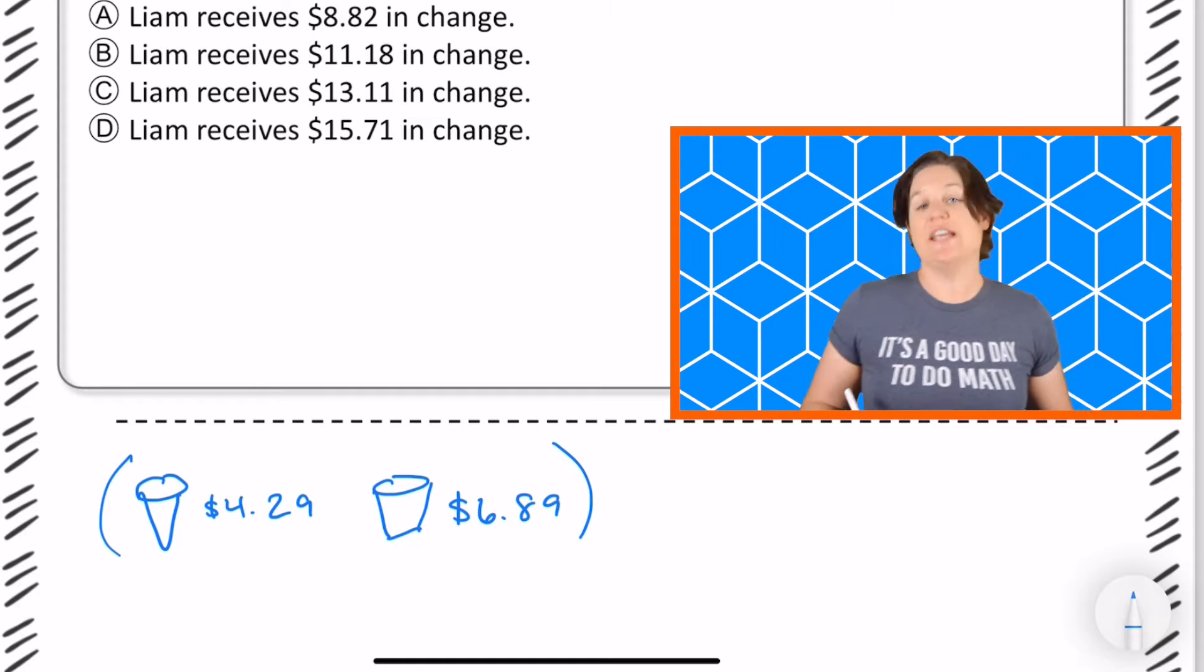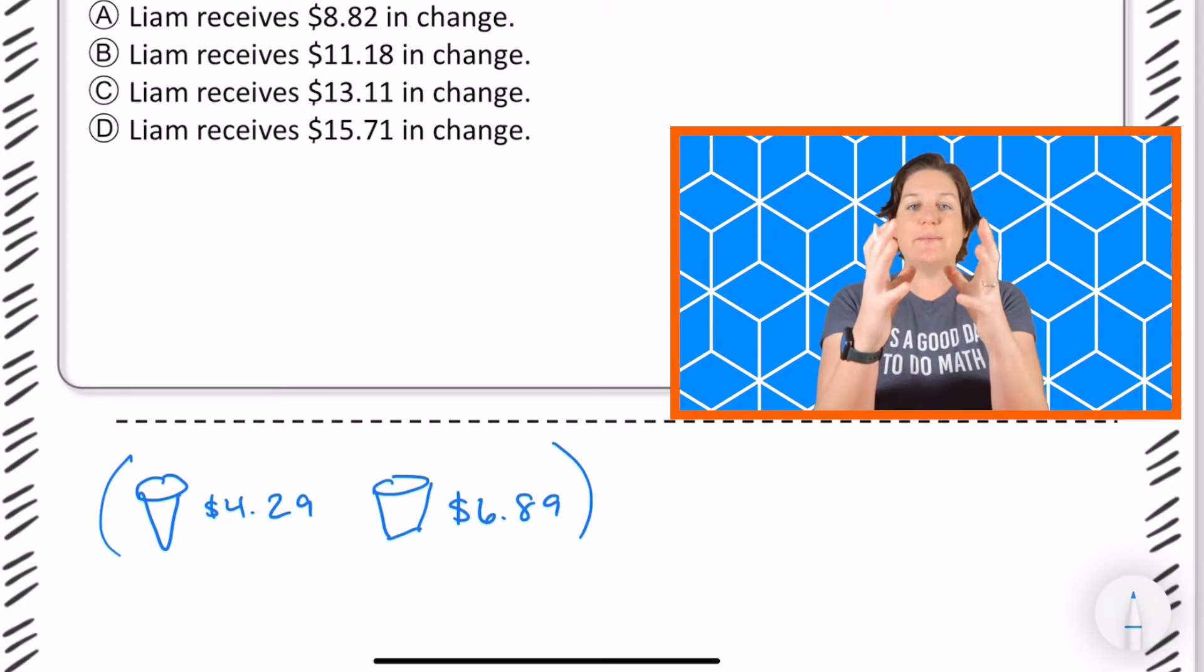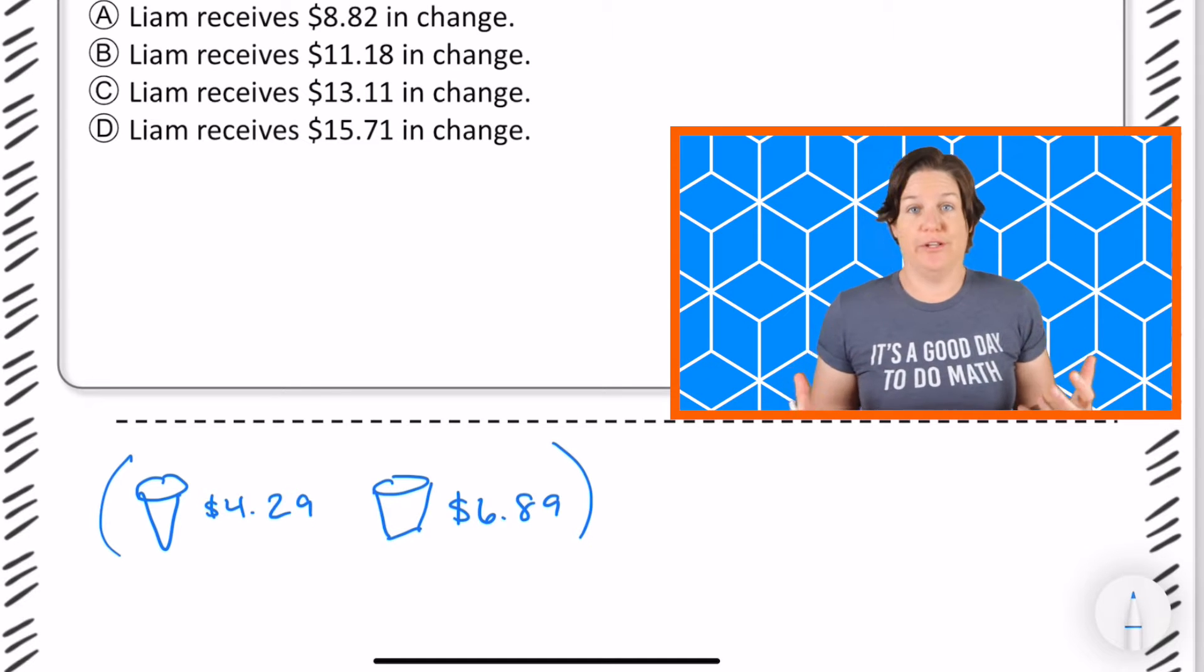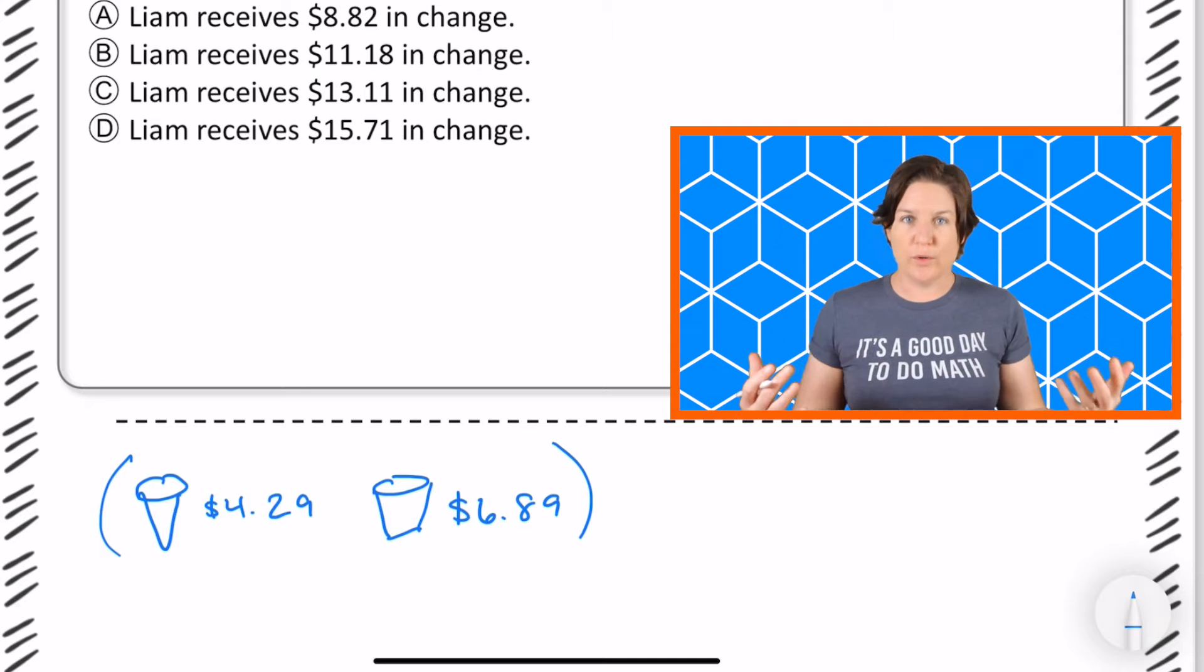So we need to take those two amounts and join them together first, really we're adding those together, and then we can subtract that from $20.